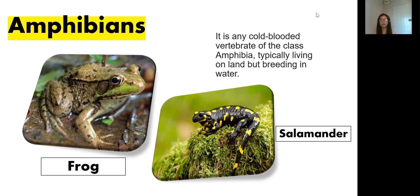So these are the examples of amphibians. The first picture is frog, and the second picture is salamander. Look at the first picture again — it's a frog, and the second one is a salamander. So these are the amphibian animals.